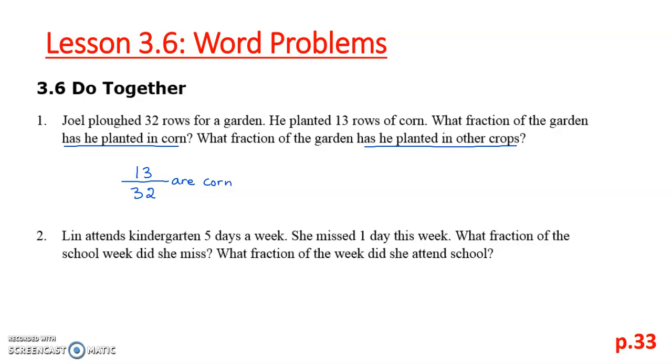To determine the other crops, we're going to take the total 32 rows, subtract away the 13, and that will give us our answer. And we can do that vertically, 32 minus 13, we'll need to borrow. And then we'll be getting 19 rows. So 19 of the 32 rows are for other crops.